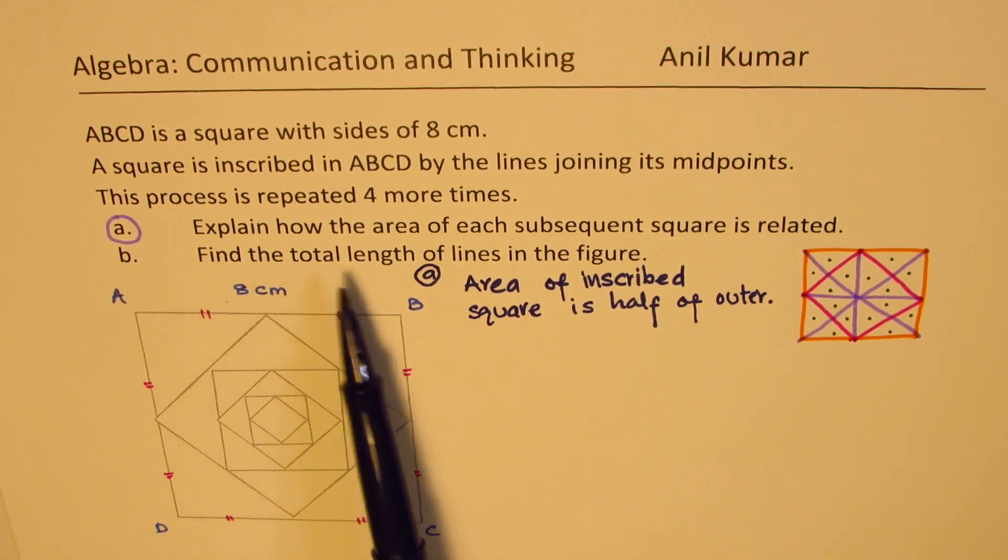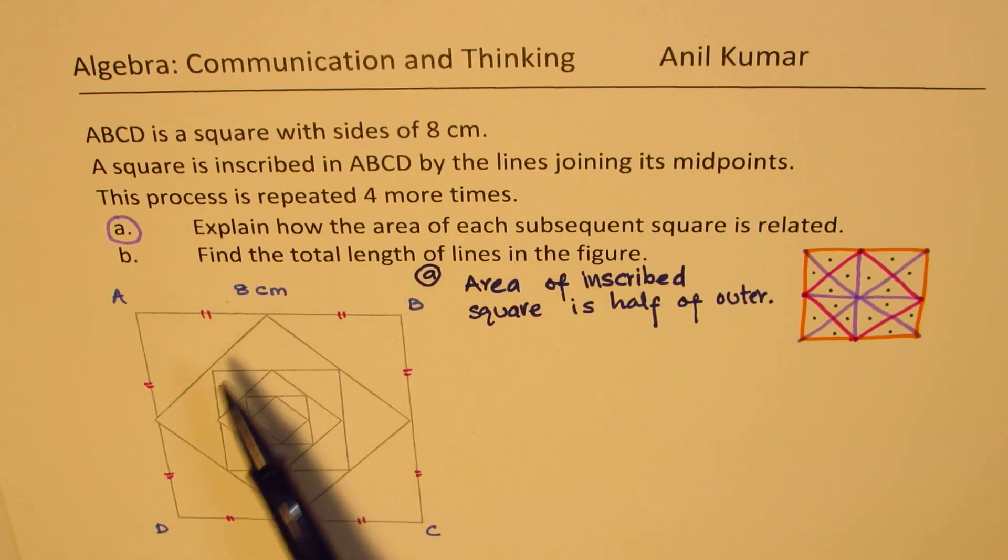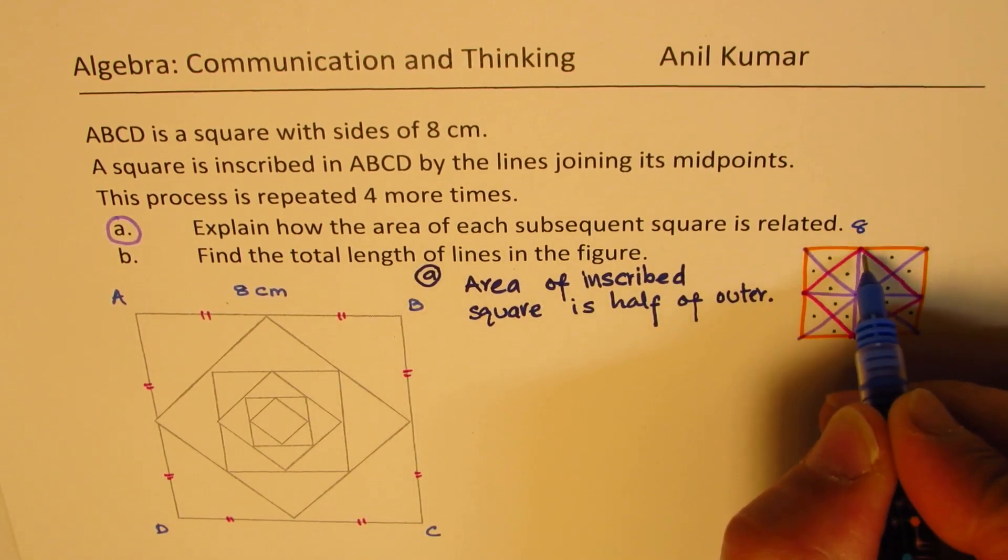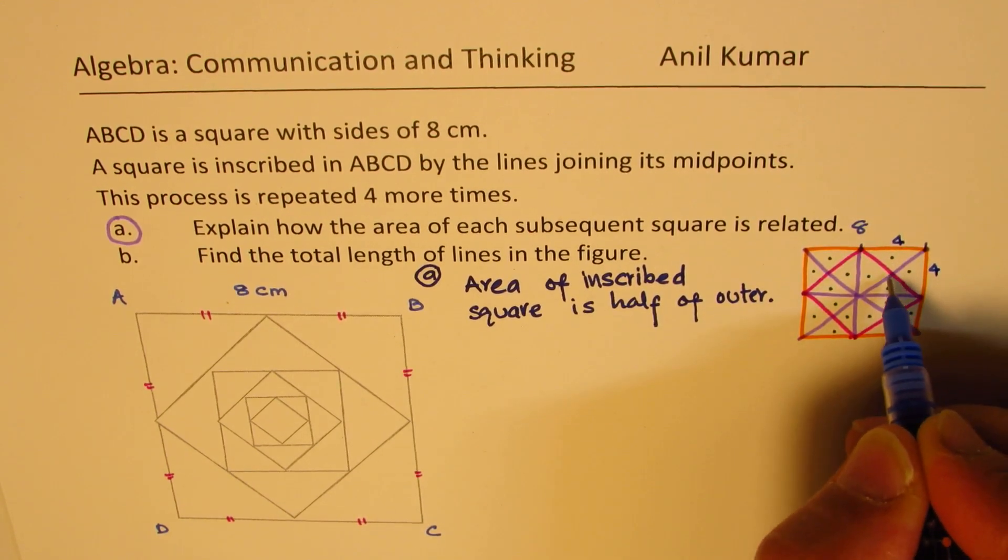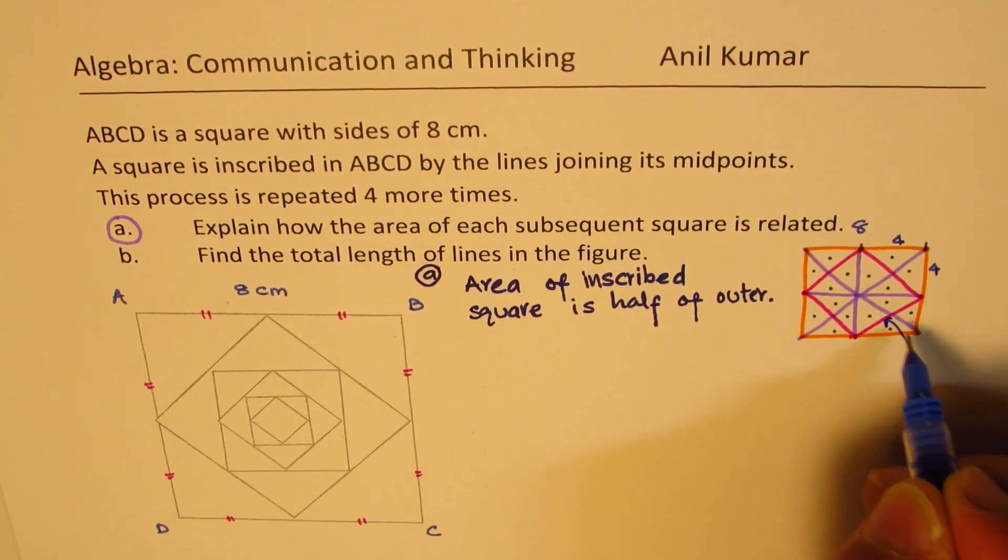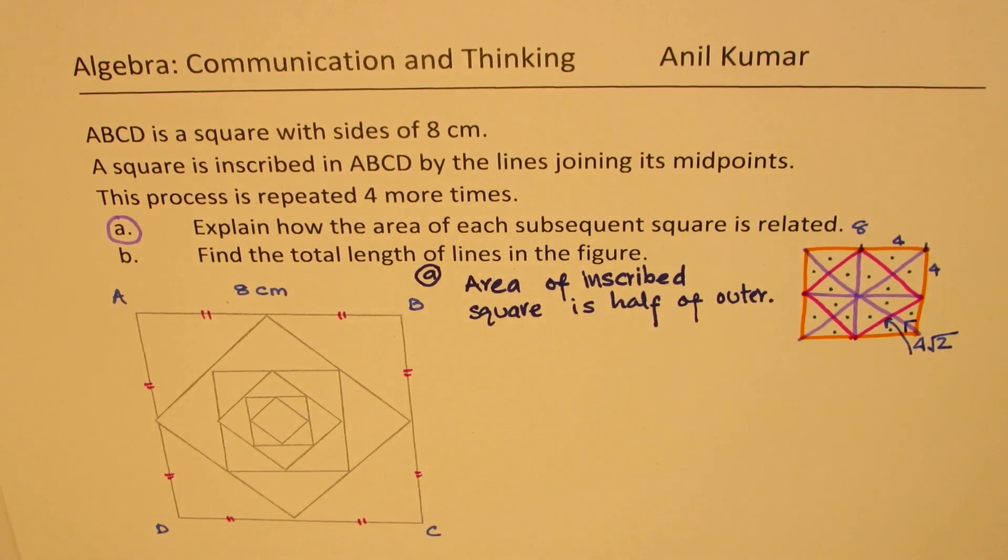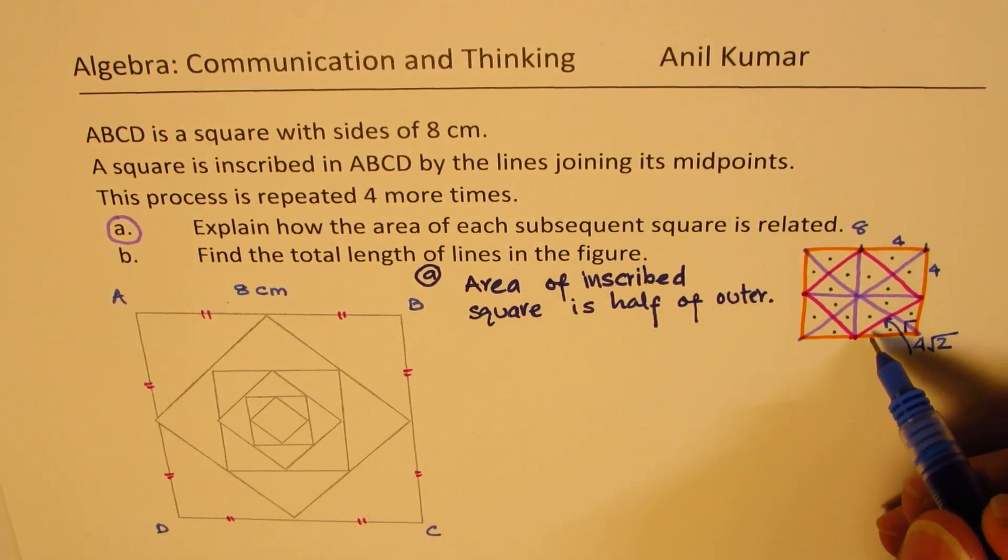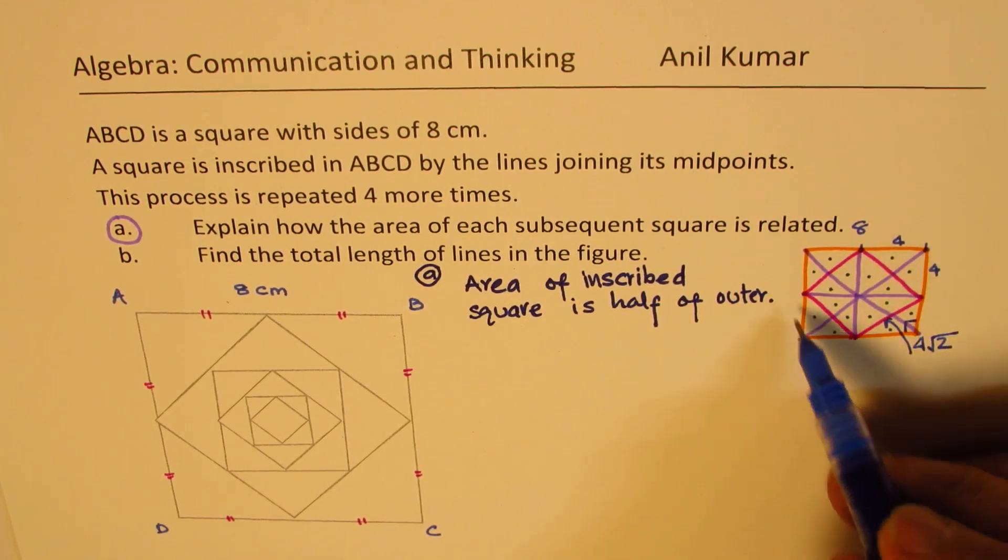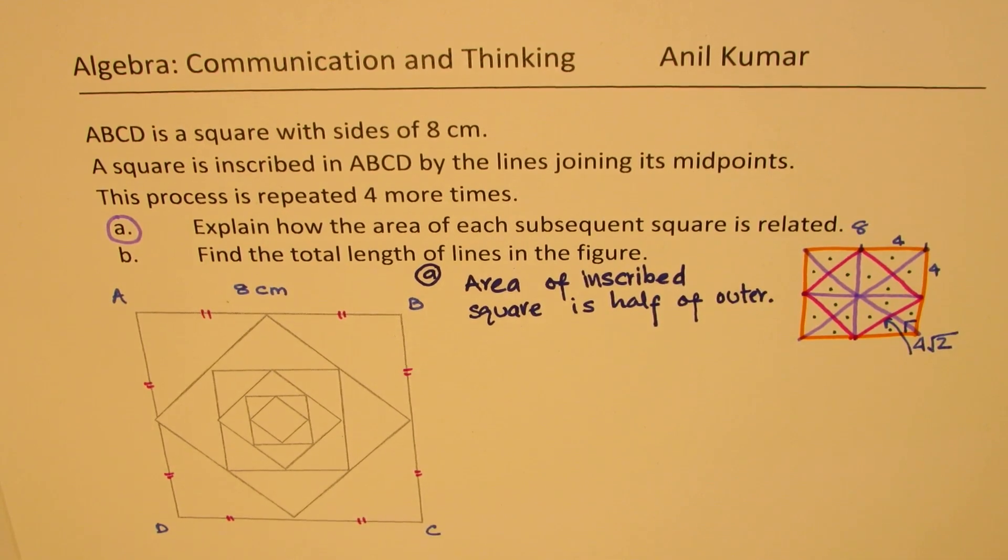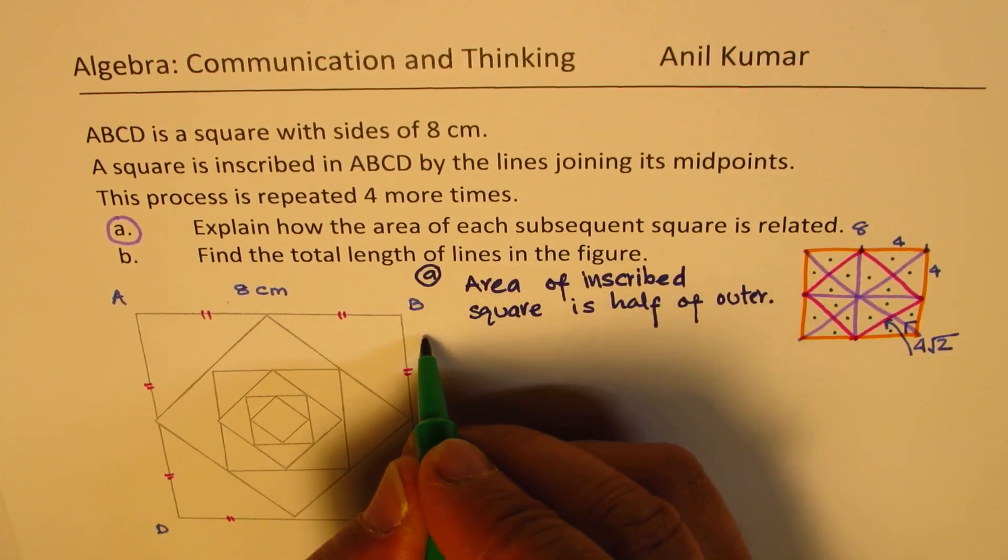Part B is find the total length of lines in the figure. We have to find total length of lines. One way is we know this outer is 8, so this much will be 4, 4 and 4. And the one which is this one will be 4 square root of 2. That is the hypotenuse. We can do all that math. And then the next one we can again do this calculation. And then we can add all the sides and find the result. That is one way of doing it, commonly used method. But here is the best approach.